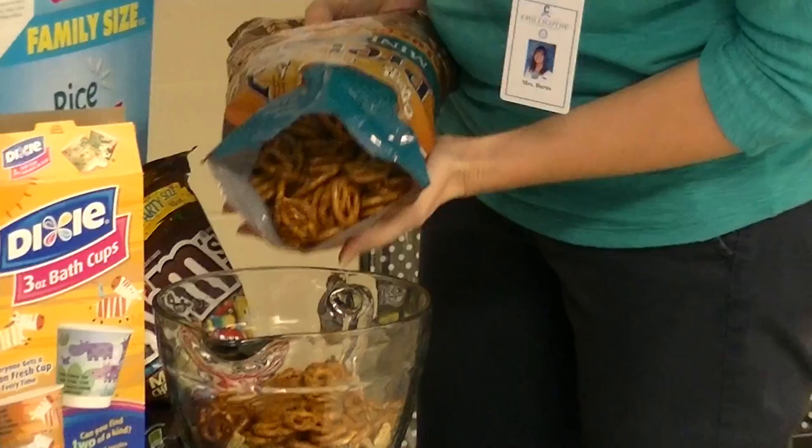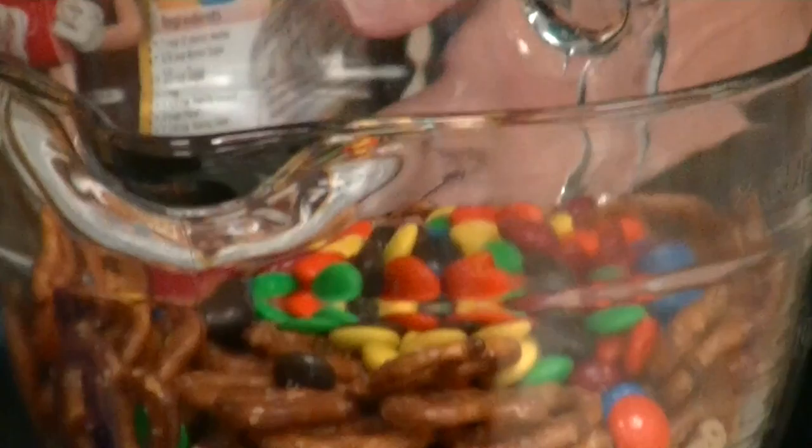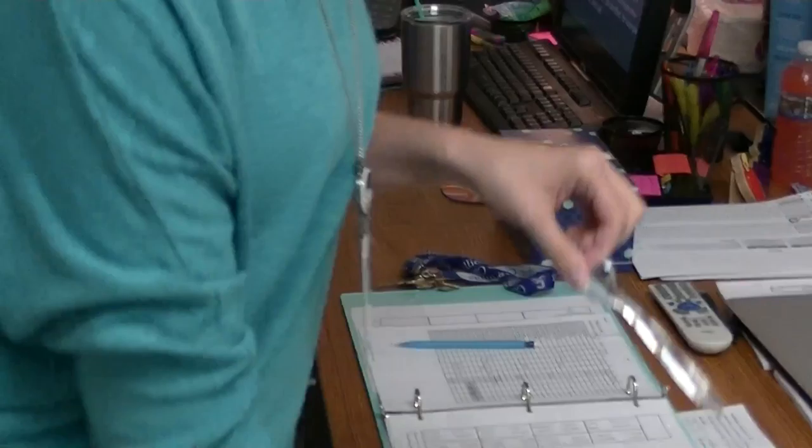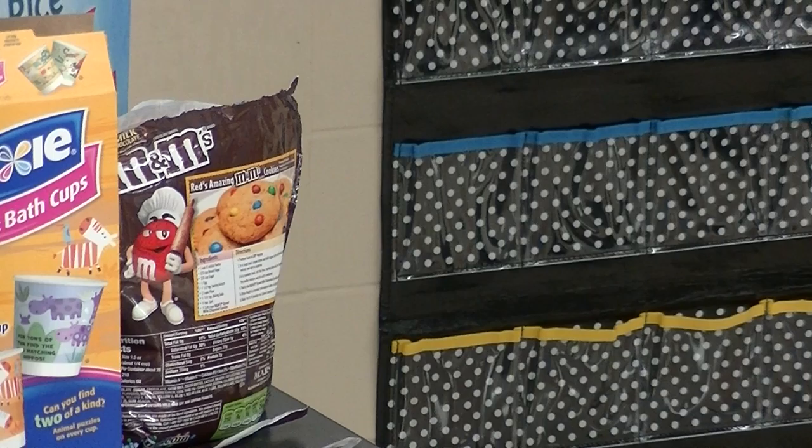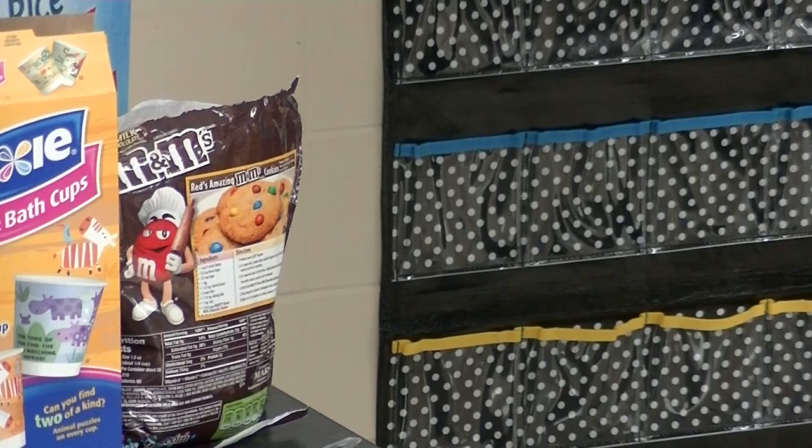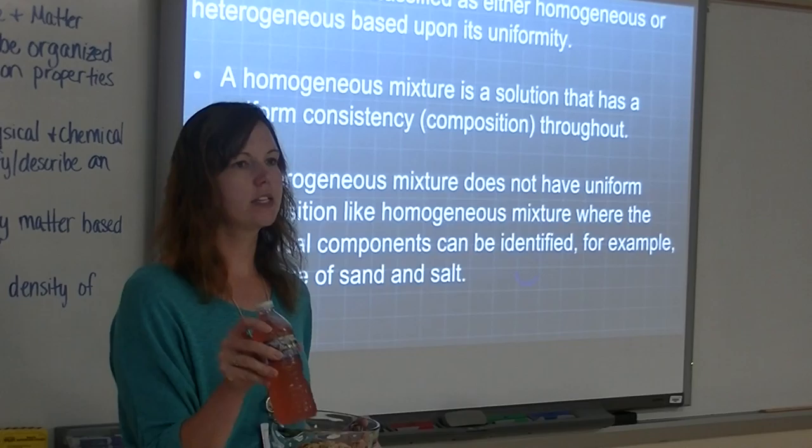So if I pour some Chex mix in here, and then I pour some pretzels in here, and then I take some of these M&Ms and put these in there. Now, all together, what do we call this? Chex mix, right? But if I mix it up, if I mix this all up, and I have Chex mix, can you still pick out the individual pieces? Yeah. Can you still pick out the fact that I still have pretzels, I still have Chex cereal, and I still have M&Ms? Can you still see all those things? So that's what's important about the definition of a mixture, is that you don't lose the original components of it.